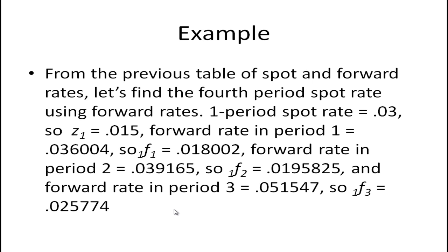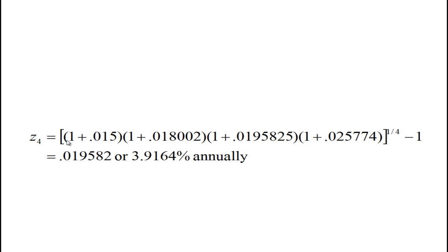And let's look at the calculation. We just substitute into this equation. Multiply those together. Raise it to the one fourth power. We'll get .019582 or 3.9164 annually. We just take this and multiply it by two. Which is in fact if you go back to the table you'll see is the correct rate.